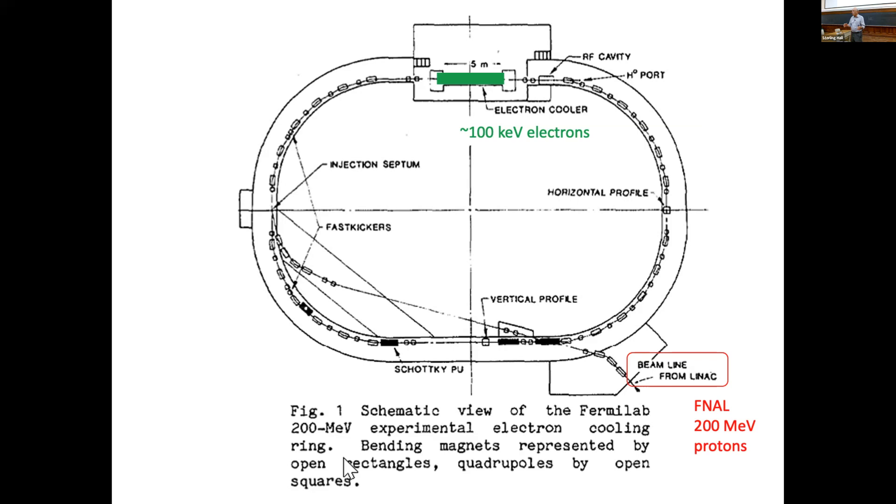In electron cooling, you have an electron beam that moves at the same velocity as the protons. So if you're a proton, all the electrons are at rest, with the exception of the random motion that has been introduced by the collisions with the air molecules. So if there is a scattering between an electron and a proton, the very much lighter electron gets knocked out to infinity, while the proton slows down in the direction it was moving previously. So the random motion becomes less.